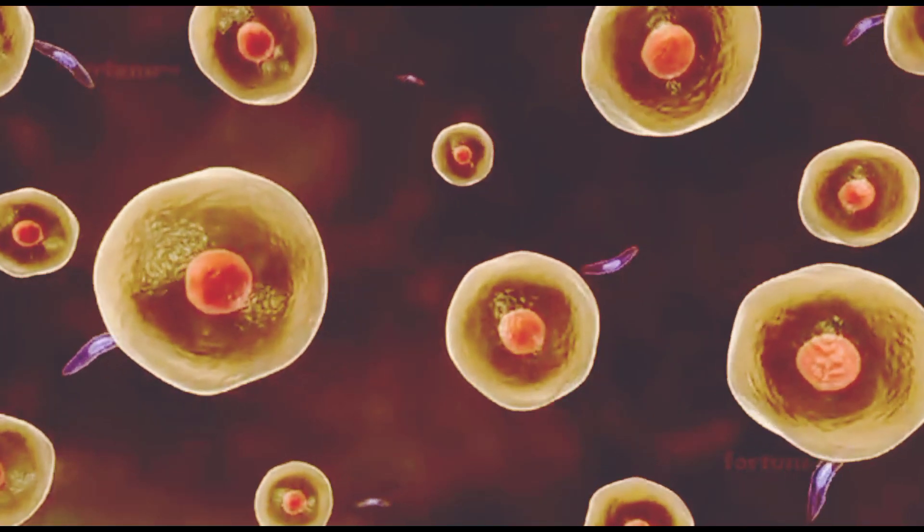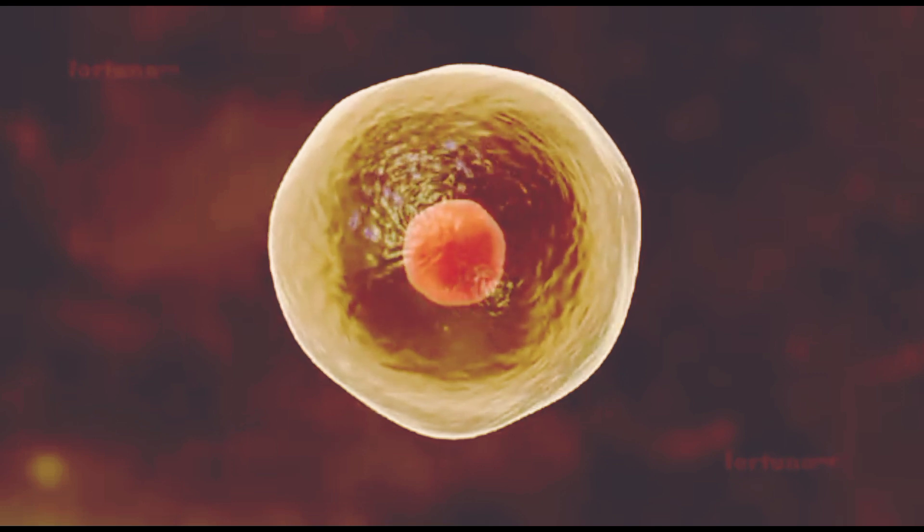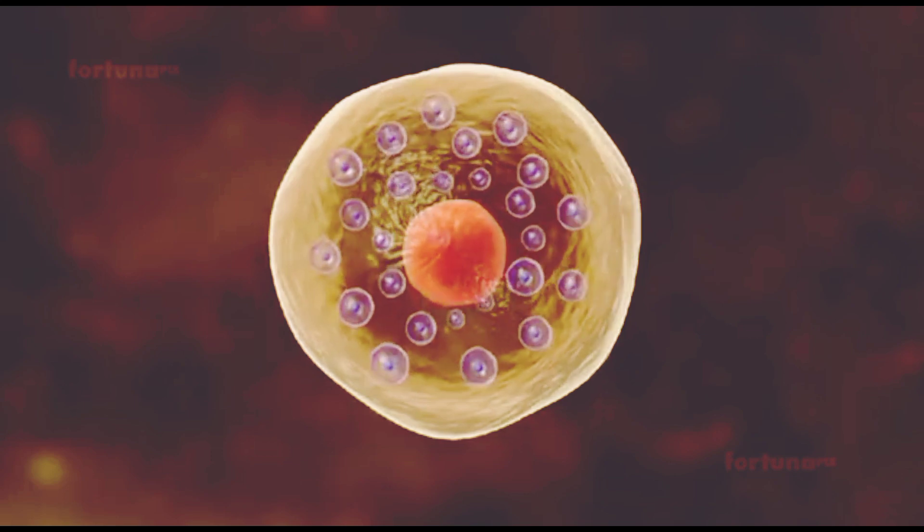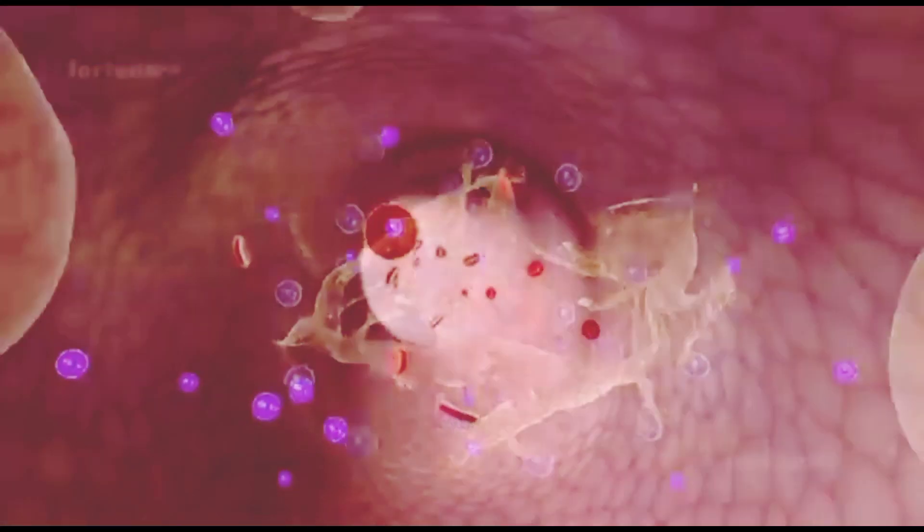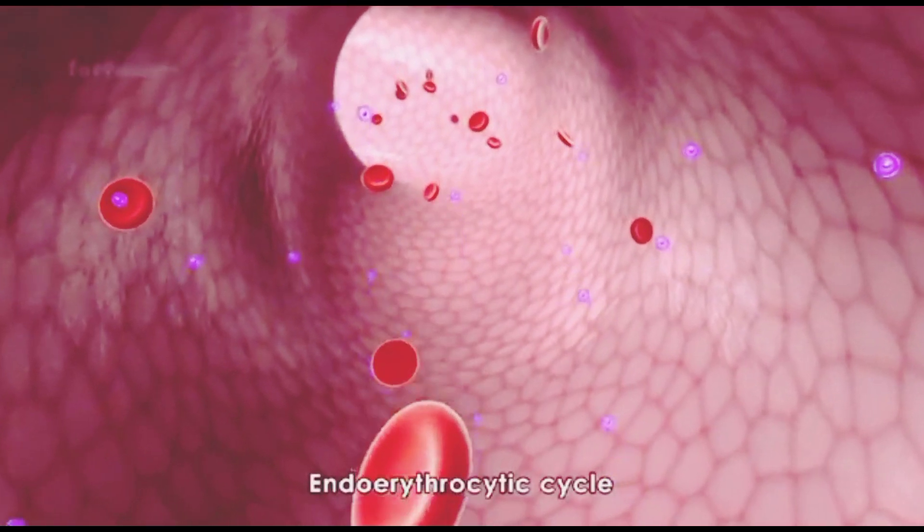The sporozoites will multiply asexually into merozoites in the liver cells. The merozoites will break open the liver cells and enter the red blood cells, beginning the endorythrocytic cycle.